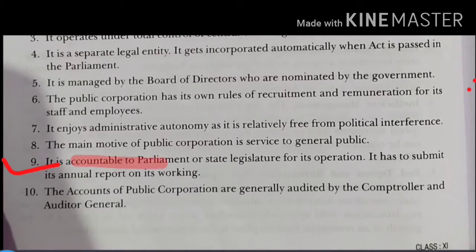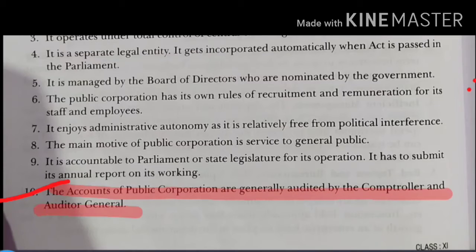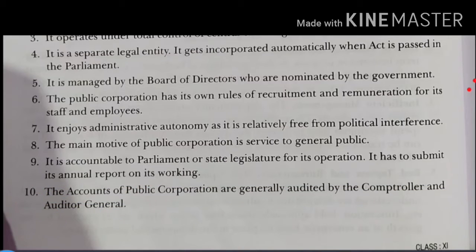The eighth point: the main motive of the public corporation is service to the general public — there is no profit motive for these enterprises. Their motive is to serve the general public. The ninth point: accountability to Parliament or the State Legislature — they must submit an annual report on their working and answer questions in Parliament about the corporation. The tenth point: the books of accounts of public corporations are audited by the Comptroller and Auditor General, who is the highest authority in the auditing profession and a government official. He checks the accounts for any fraud and ensures proper book maintenance.